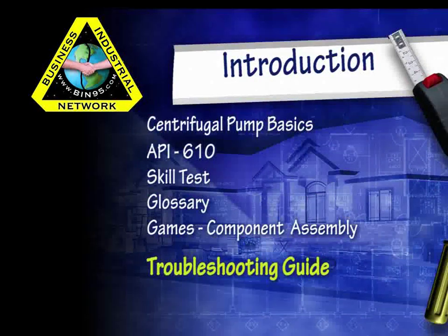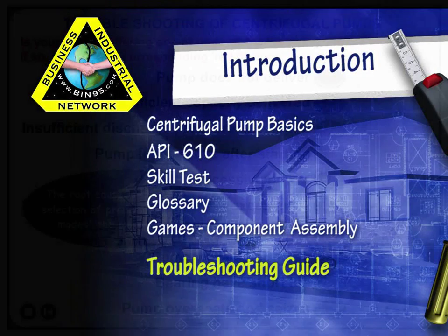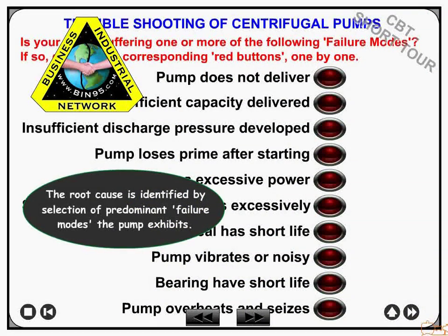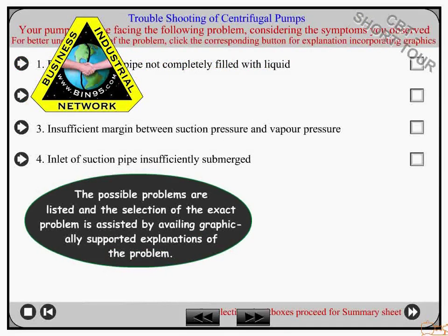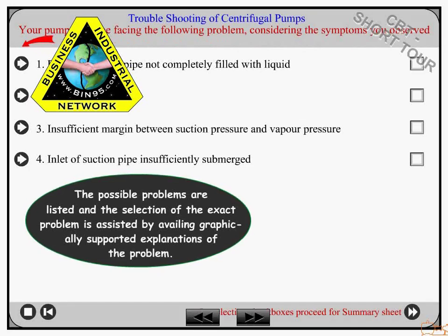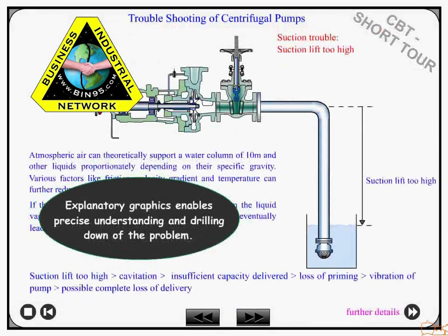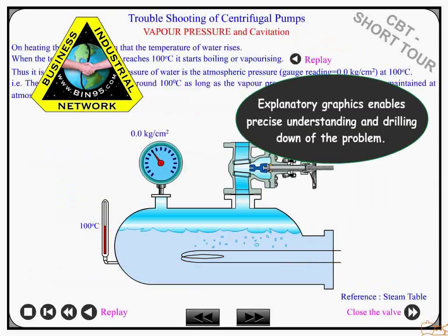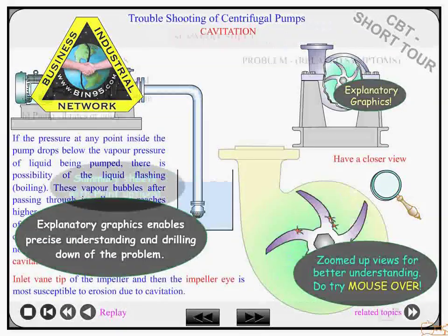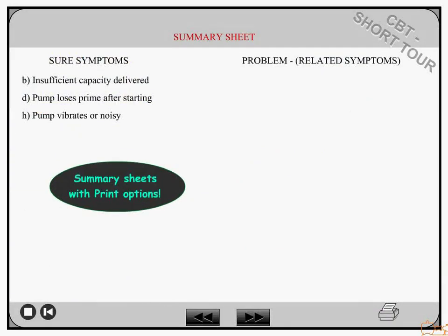Included in this computer-based training is the troubleshooting guide. Through the troubleshooting guide, the root cause is identified by selection of predominant failure modes the pump exhibits. The possible problems are listed, and selection of the exact problem is assisted by graphically supported explanations. Explanatory graphics enable precise understanding and drilling down of the problem. The troubleshooting guide also includes summary sheets with printout options.